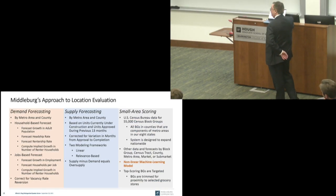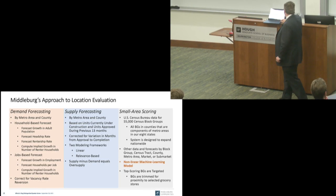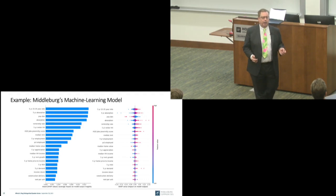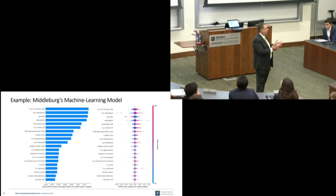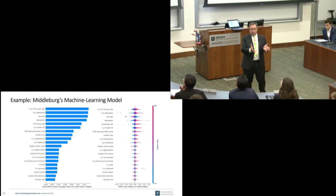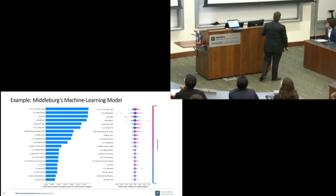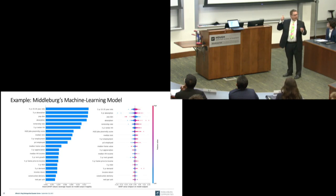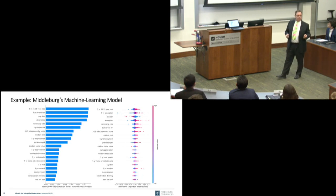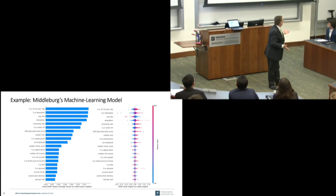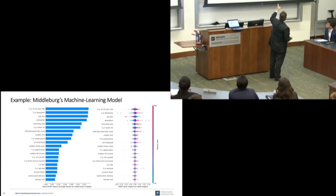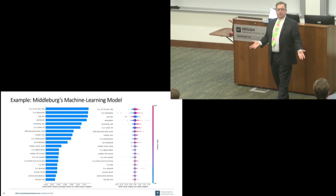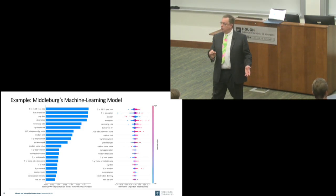Let's talk about our small area scoring. We use a nonlinear machine learning process to score our locations. Going from the top of the model: five-year growth in the 25-to-35-year-old population, currently from Oxford Economics at the county level. Five-year absorption of units going forward from CoStar at the sub-market level. Population density from the Census Bureau at the block group level.